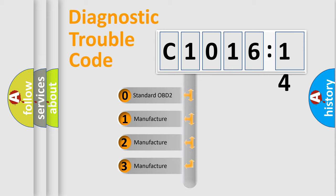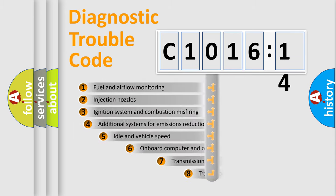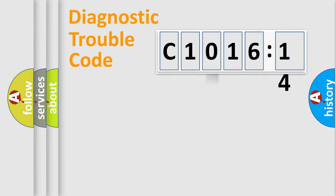If the second character is expressed as zero, it is a standardized error. In the case of numbers 1, 2, or 3, it is a manufacturer-specific error. The third character specifies a subset of errors.